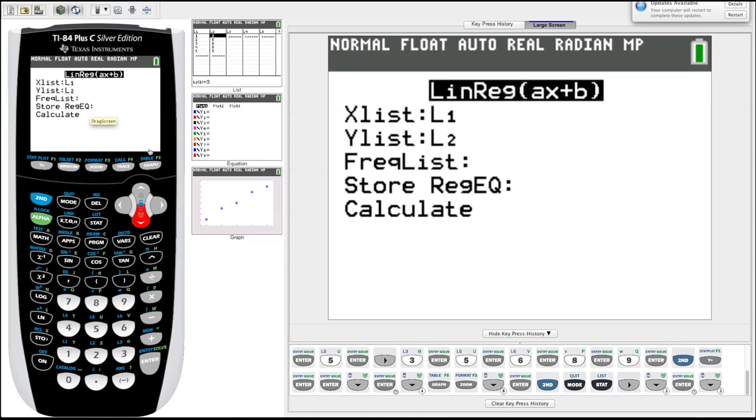Yeah, we do want to store it because we want to plot it, we want it to graph, we want to graph the line it produces. So what we'll do is we'll enter it into y1. You see this middle screen has an image of my y equals screen. Let's enter into y1. And to do that, we have to go into vars, sort of variables.